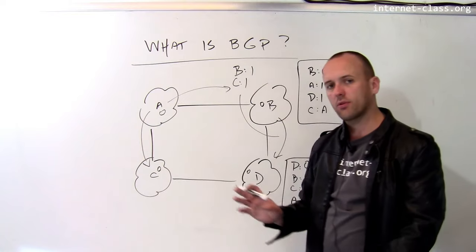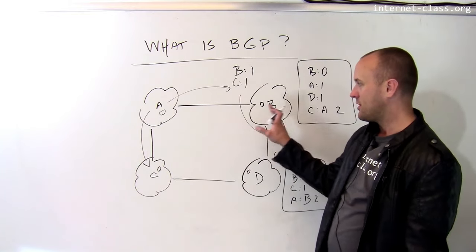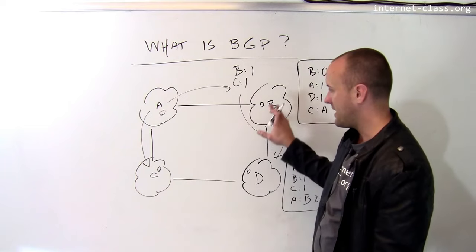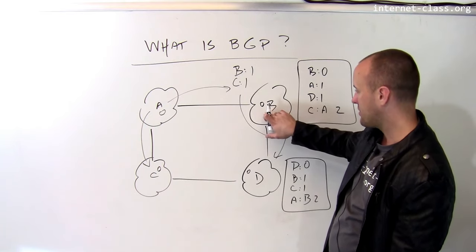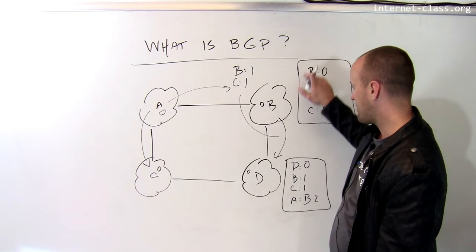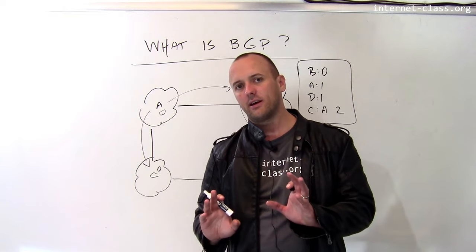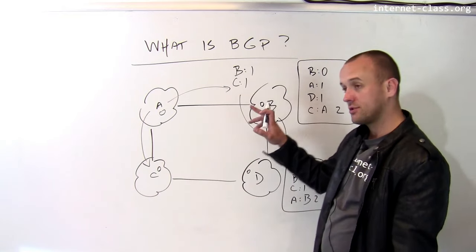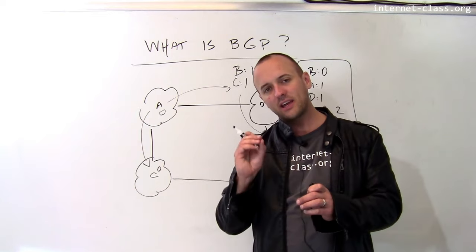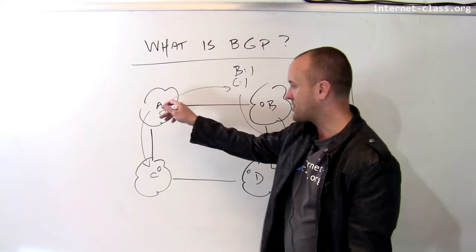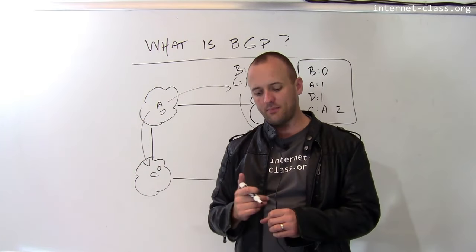So this is how the Border Gateway Protocol, a very simple example of how the Border Gateway Protocol uses these advertisements about reachability to determine, to allow each host on the internet to build up a routing table that essentially allows it to route to any autonomous system that's connected to the internet. So in order to route data, the routers at UB actually have to know which direction to send packets that are potentially destined for every autonomous system that makes up the internet.